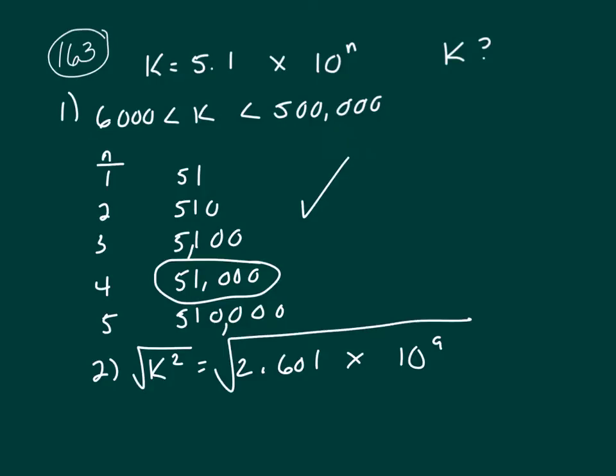You don't have to do that work because with data sufficiency problems, we're not trying to find the actual value of k. Just is there enough information given to us that we could find k, and the answer is yes.